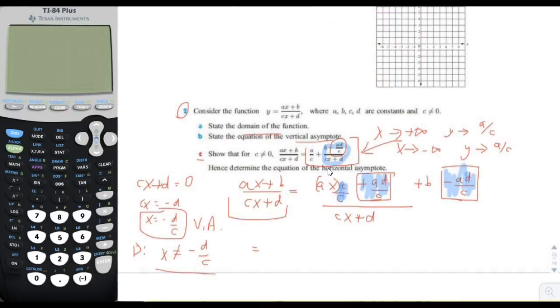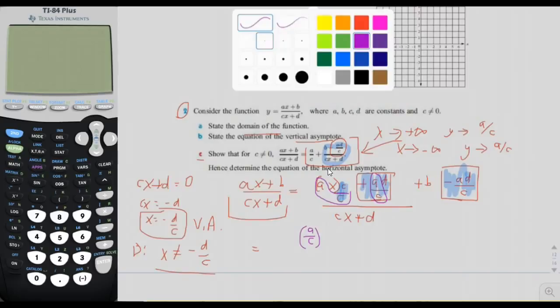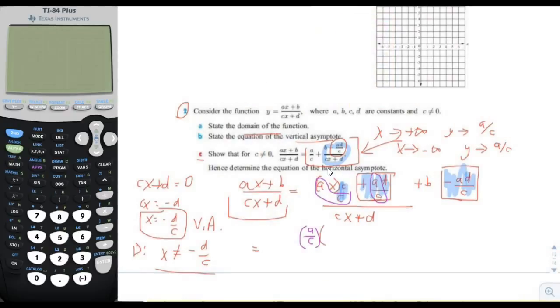But now you can see that we have ax, we have a over c here, and we have a over c here, and we can factor out the a over c. And if we factor out the a over c, then what we're left with inside is cx plus d. And now you can kind of start to see why we put that in.